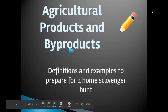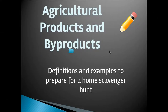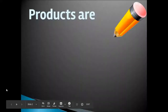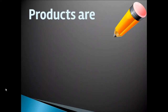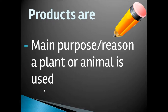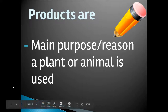This week, we are going to explore agricultural products and byproducts in preparation for a home scavenger hunt. First, let's take a look at what products are. Note there is a pencil here — this is something you might want to write down to come back and remember. Products are the main purpose or reason a plant or animal is used.